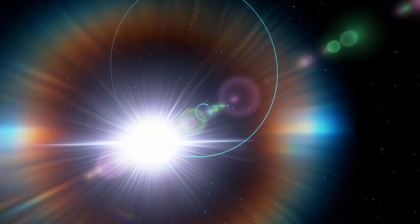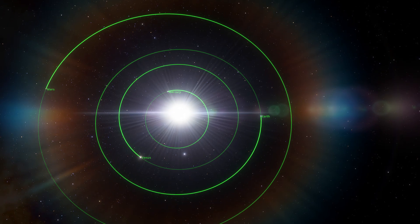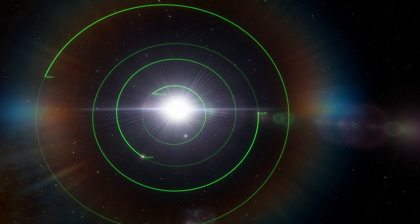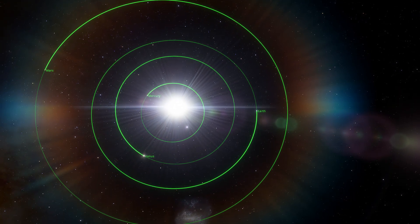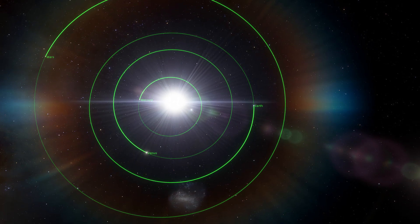A sun-like star is orbiting Gaia BH1 at about the same distance as the Earth orbits the sun. The study's lead author, Karim El-Badry, said if you put a black hole where the sun is and the sun where the Earth is, you'd get a similar system to Gaia BH1.